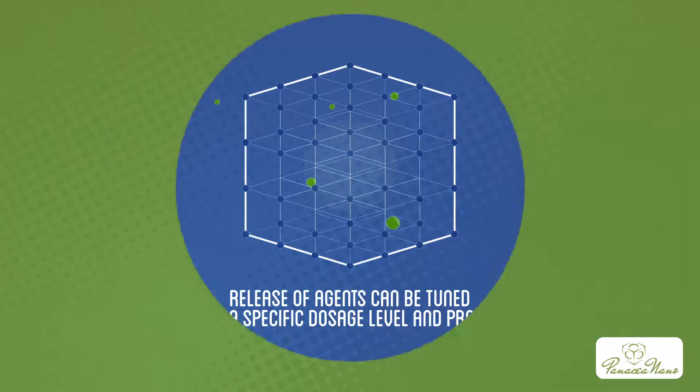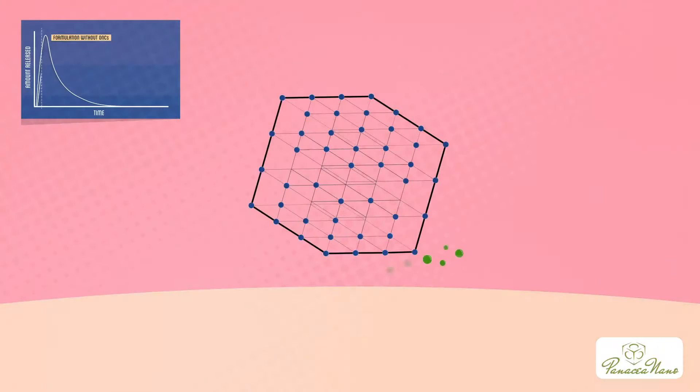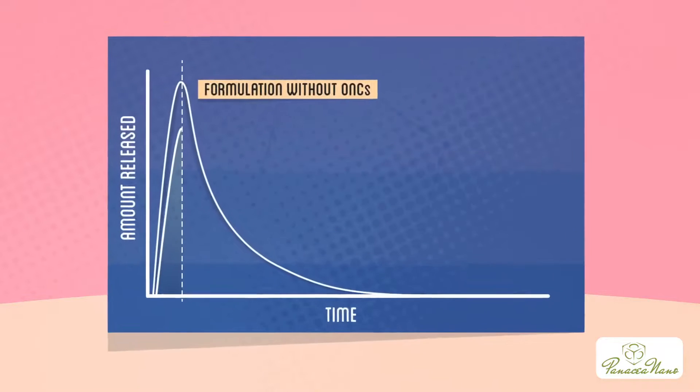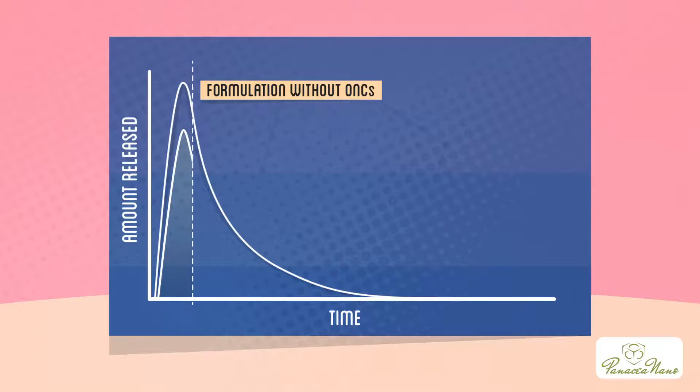Now, let's walk through how it works. The free agents outside the nano-cubes diffuse to the skin first. Again, the curve starts to dip down as the amount of free agents starts to reduce.